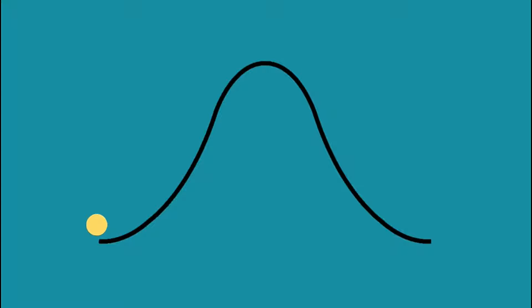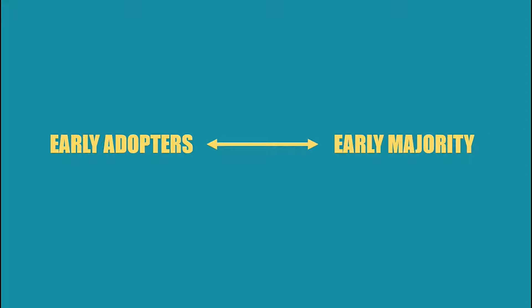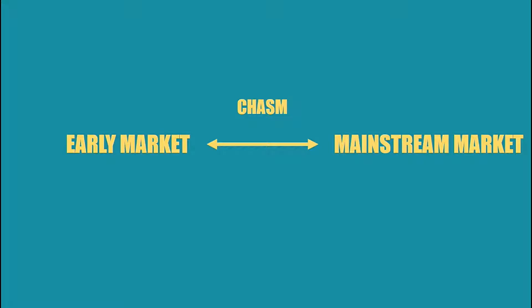In the last video we came to know about the technology adoption lifecycle. We learned about the different stages of the lifecycle, how customers are going to behave in each stage, and how a company should try to reach each of those customers. In that video we talked about a specific problem called chasm, and in this video I'm going to talk about what chasm is and how to overcome it to become a successful business. The difference between early adopters and early majority is called chasm, or in other words, the difference between early market and mainstream market.